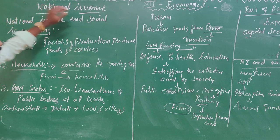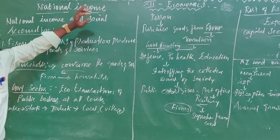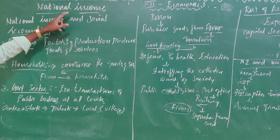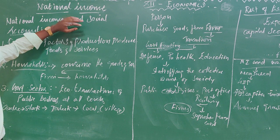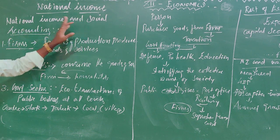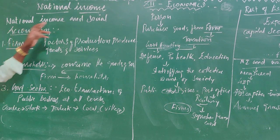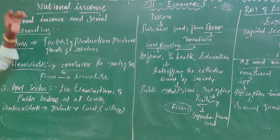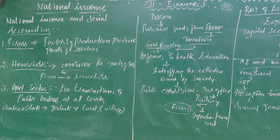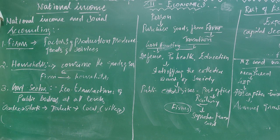Dear students, we are going to the topic Economics, 12th standard, in the National Income chapter — National Income and Social Accounting. These are not the same thing, but they are connected. That's why we will see social accounting and national income together.